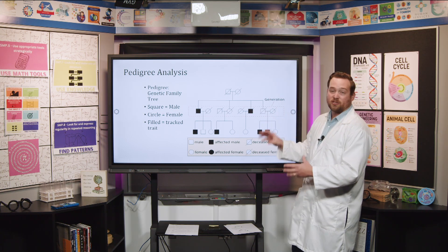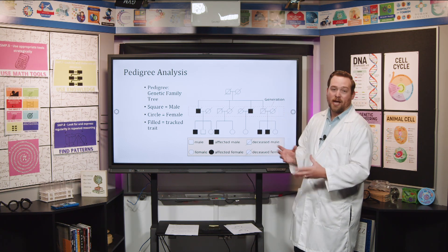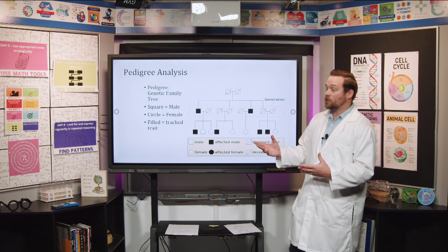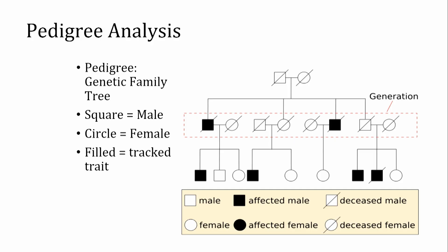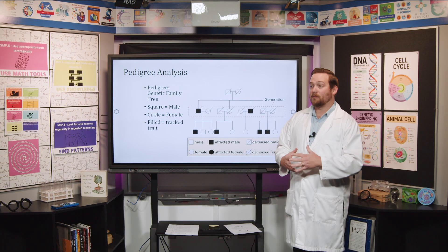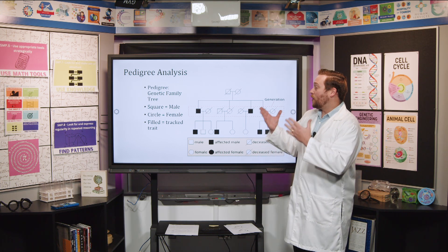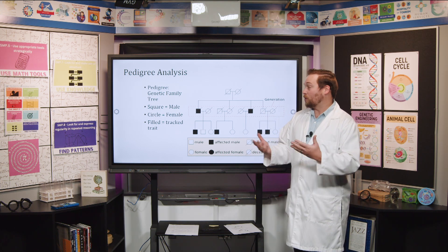The different shapes tell you something about those individuals. All of the squares on a pedigree are always going to be males, and the circles represent females. Something else that's very important — you'll see that some of these shapes are shaded in. That means those individuals have the trait that we're tracking. It could be hemophilia, polydactyly, or any type of genetic disease. We fill in the shape for whatever trait we are tracking.